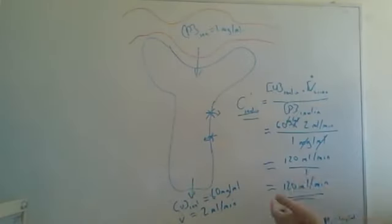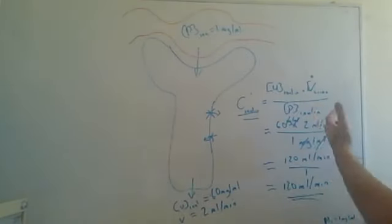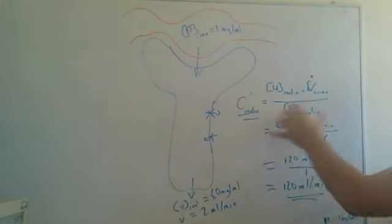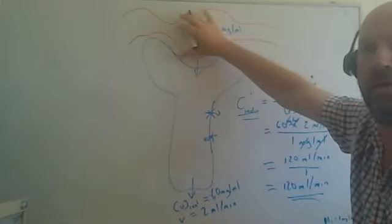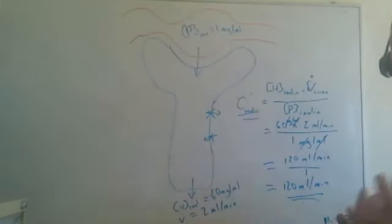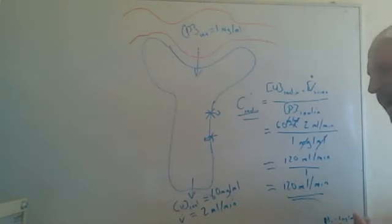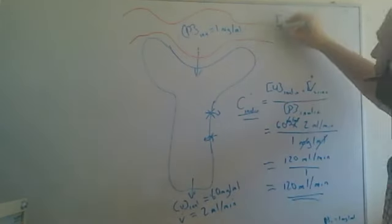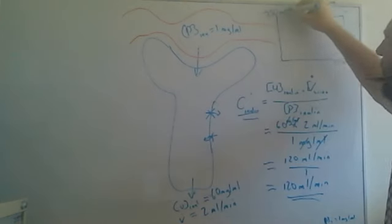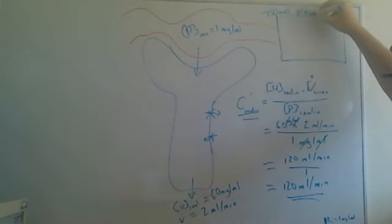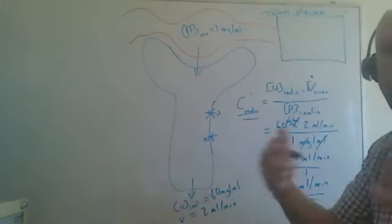So therefore by making this calculation and calculating the clearance of inulin, we now get a value for the volume of inulin that has been cleared from the plasma from here in the glomerular capillary every minute. Now going back to what I said in the previous part in part 1, again if we look here, here's the 750 ml of plasma that passes through the glomerular capillary every minute.